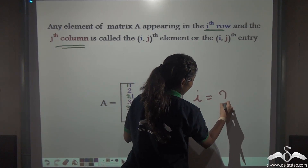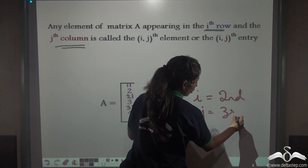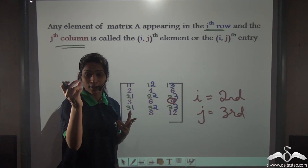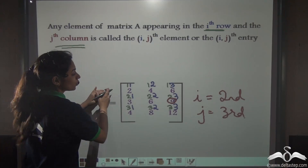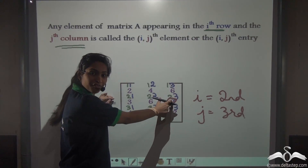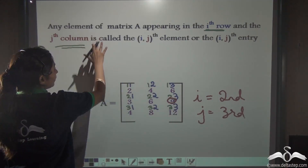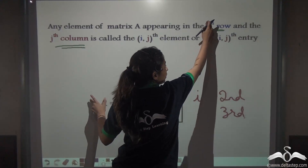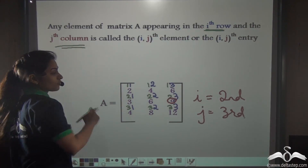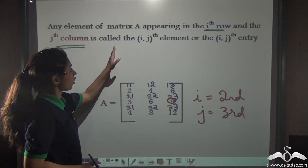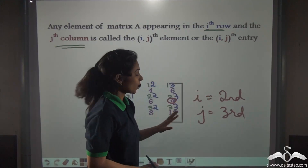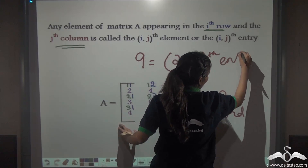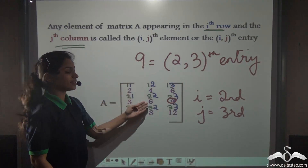Here i will be 2 (second row) and j will be 3 (third column). So if I give you a matrix and tell you to locate the entry on the second row and third column — second row this one, third column this one. You can define any entry this way. So 9 is actually the 2,3-th entry of matrix A. This is how you define such elements or entries.